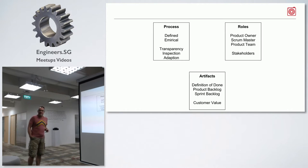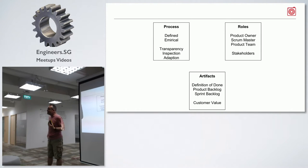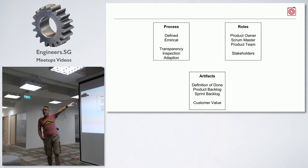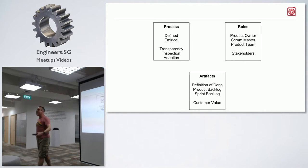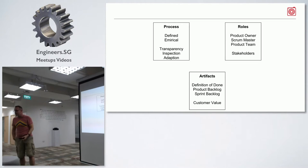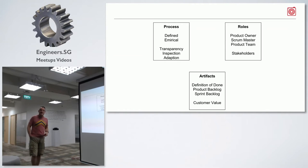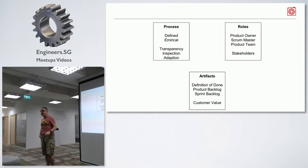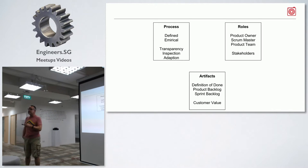Next is the product team. These are the people who decide how they're going to do what the product owner wants. It's a very clear distinction: the product owner says this is what we need to meet our customers' needs, and the product team says this is how we're going to tackle it, how we're going to make it, and how much work we're going to do in any given period of time.